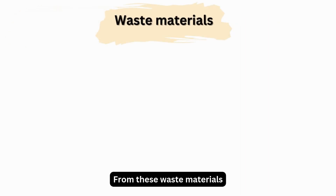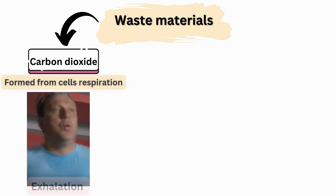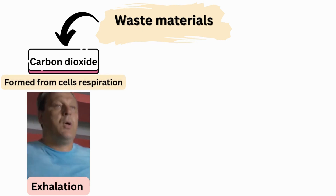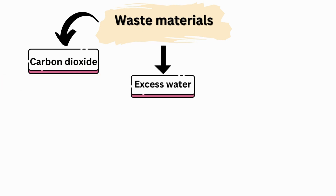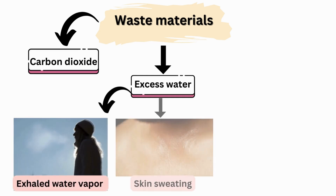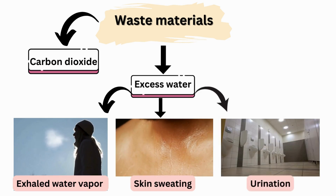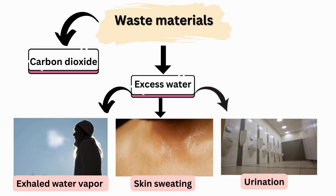From these waste materials: carbon dioxide, which body cells make in respiration, leaves the body through the lungs during the exhalation process. Excess water that is not needed by the body is expelled outside through the lungs in the exhalation process, through the skin via sweating, and through the urinary system during urination.